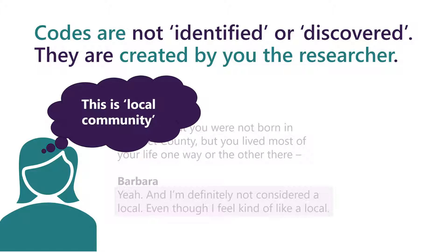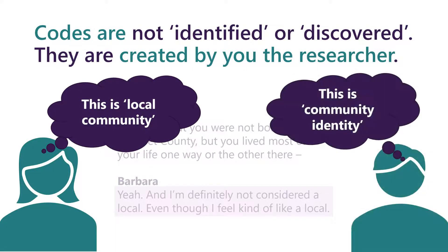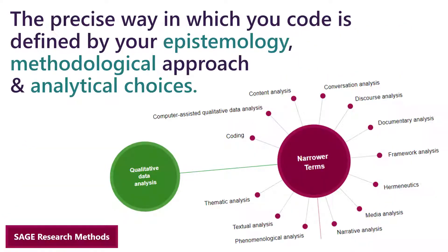Codes are not identified or discovered — they are created by you, the researcher. Where one researcher looks and sees 'local community', another might label it differently, such as 'community identity'. The precise way in which you will code is defined by your epistemology, your methodological approach, and your analytical choices.